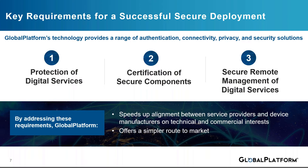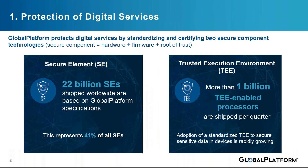Let's look at each key requirement. The first area that we standardize is the protection of secure digital services and associated assets. Global Platform technology enables secure digital services to be brought to market by protecting digital assets, such as a fingerprint or cryptographic keys, and their associated security services, such as an authentication service. We do this by standardizing two secure component technologies. A secure element, or SE, is a tamper-resistant platform — typically a one-chip secure microcontroller capable of securely hosting applications and their confidential and cryptographic data, in accordance with rules and security requirements set forth by well-identified trusted authorities.